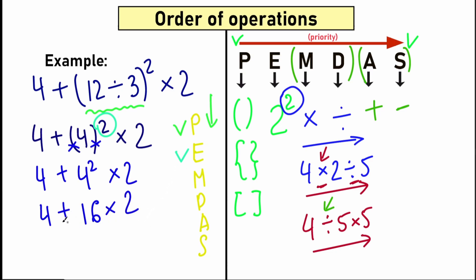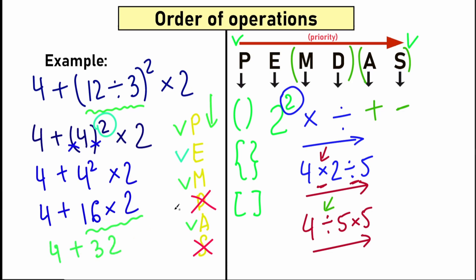Now we have only multiplication and addition. We can cancel the division part — we don't have it — and cancel subtraction — we don't have it. With multiplication having higher priority than addition, we perform multiplication first: 16 times 2 equals 32. Then we complete the addition: 4 plus 32 equals 36. So the correct answer to this example is 36.